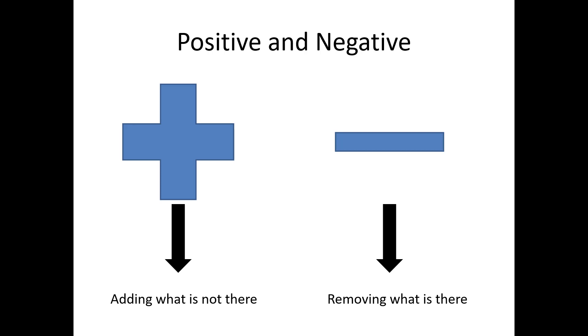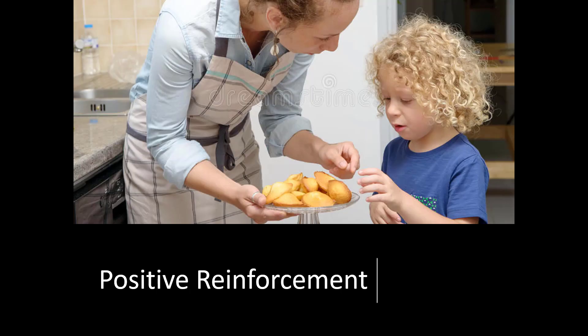We can have a positive punishment or a negative punishment, a positive reinforcement or a negative reinforcement. A positive reinforcement is when we are adding something to the environment that increases the likelihood of a behavior. This is what we most classically think of as a reward — giving somebody something to encourage the behavior. For example, if a child does all their homework they get a cookie, if they get all A's they get $20, if they don't cry at the doctor they get ice cream, or do a good job at work and you get a bonus. You're giving something that is desired.